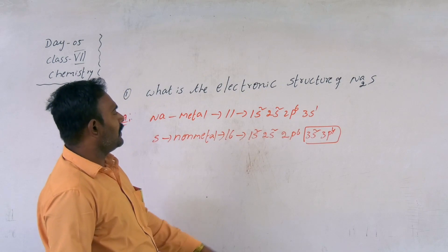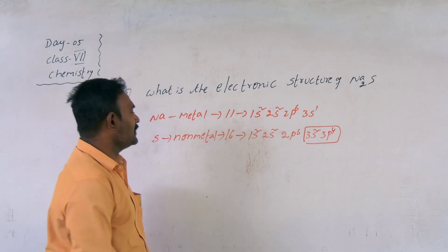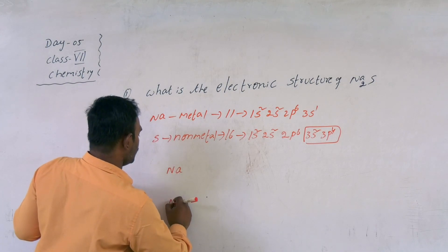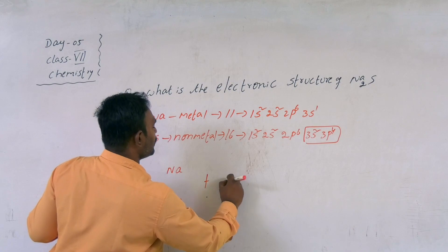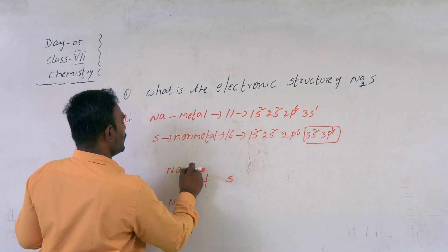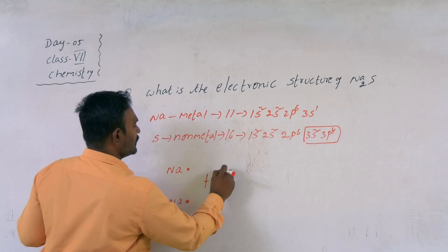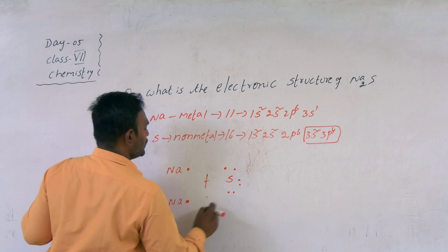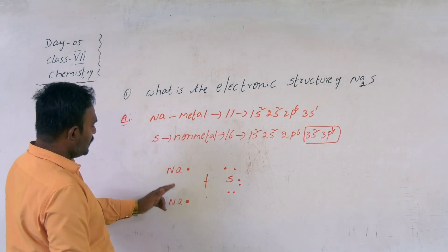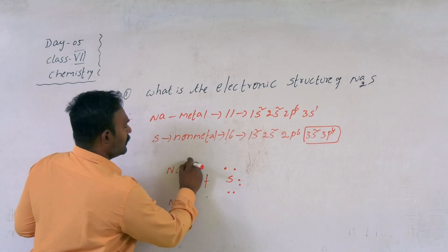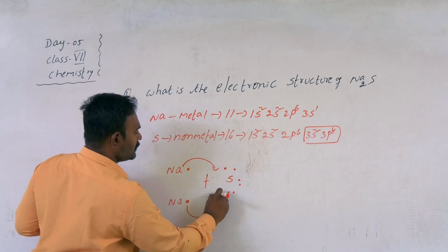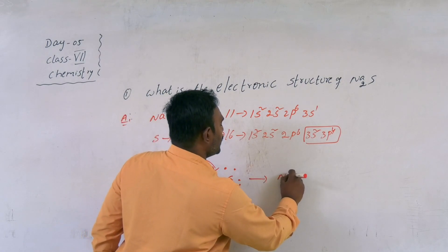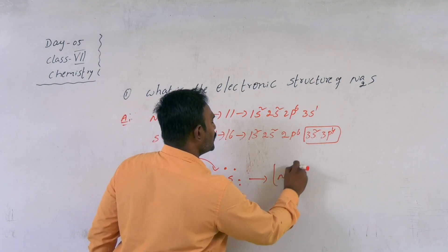Sulfur has 6 valence electrons; sodium has 1 valence electron. We have 2 sodium atoms and 1 sulfur atom. Since sodium is metallic in nature, it donates its electron to sulfur. Sodium loses the electron and as a result carries a positive charge.